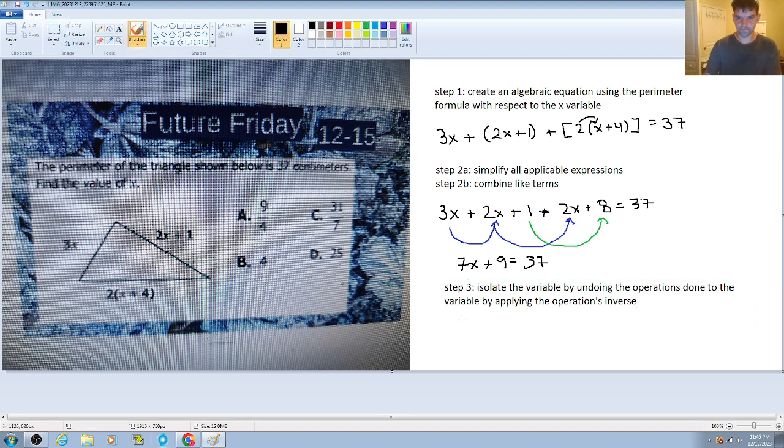So going back here. We have 7x plus 9 is equal to 37. So that plus 9, to undo that operation, I'm going to subtract 9 from both sides. And that's going to give me that 7x. The plus 9 and then minus 9 will cancel out. We want that, because it's giving us one step closer to getting x by itself. So this is going to be that 7x is equal to 28.